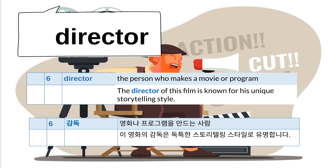Number six: director. A director is the person who makes a movie or program. For example, the director of this film is known for his unique storytelling style.